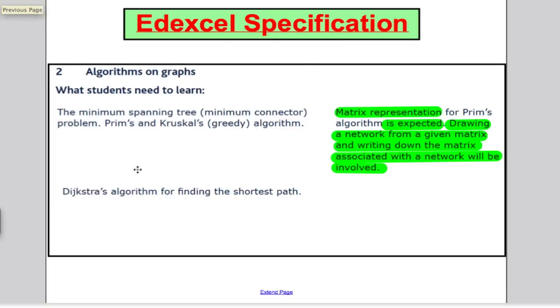We need to look at the algorithms on graphs. In green I've highlighted what we know. We know how to represent a network or a graph with a matrix and go from a matrix back to a network or graph. But what we're going to learn in this tutorial is about what a minimum spanning tree is or a minimum connector problem, and we're going to do it by what's called Kruskal's algorithm. Let's take a look.